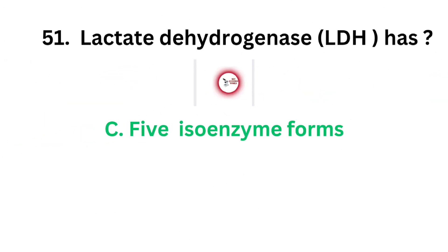The correct answer is option C, 5 isoenzyme forms. LDH has 5 isoenzyme forms.